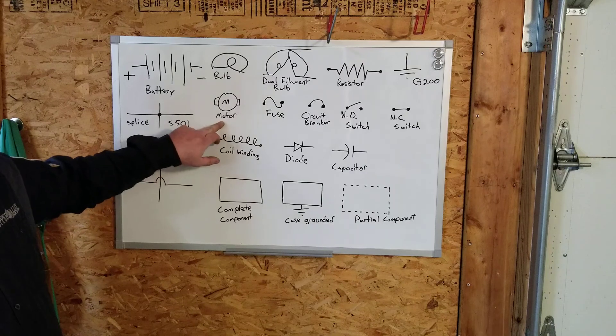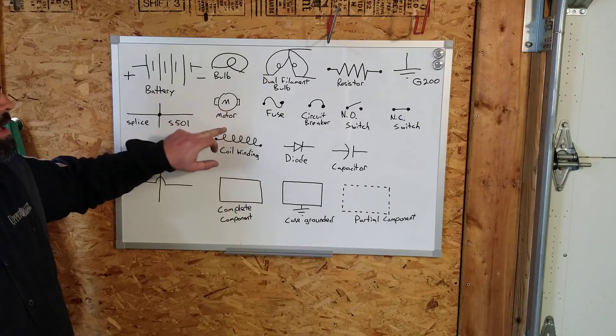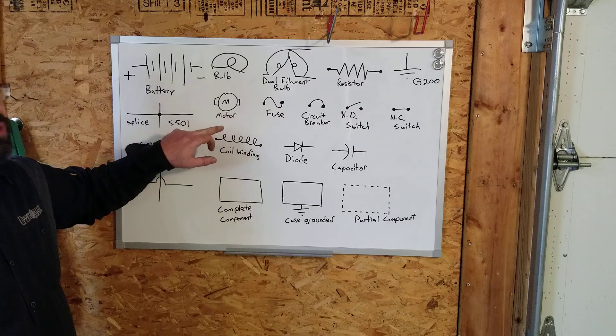As we move across, motor. This is a brush-type motor. There's an M inside it. The little box is indicated as a brush-type motor.